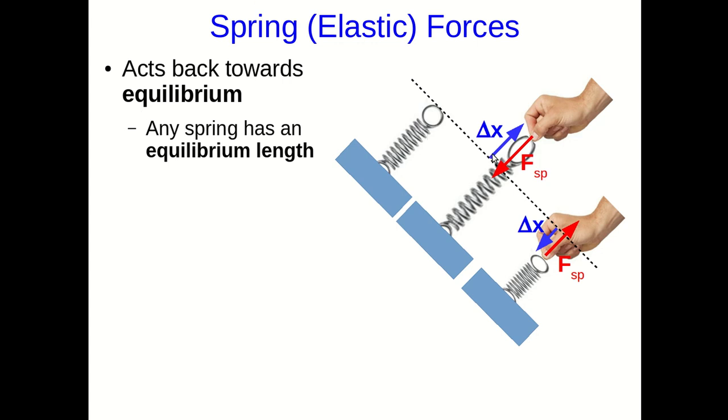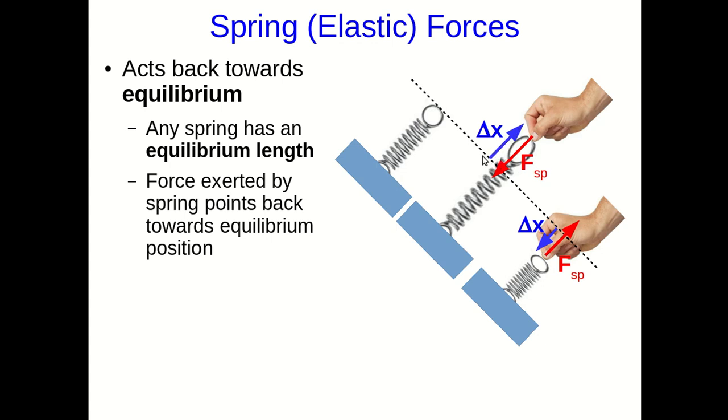A spring force always acts back towards the equilibrium, and what I mean is that any spring has an equilibrium length, the length that it has when no forces are being exerted on it. But if you pull on a spring so that it stretches, so the displacement of the end of the spring points in some direction, then the spring pulls back on your hand. That's what we call the spring force, the force that the spring exerts on you, and that spring force points back towards the equilibrium position.